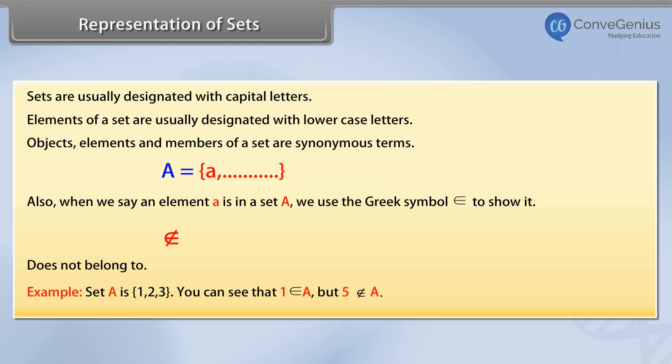Example: set A is 1, 2, 3. You can see that 1 belongs to A, but 5 does not belong to A.